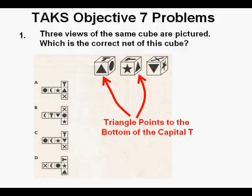These two views show a triangle pointing to the bottom of the big letter T. And which one of the unfolded nets in the answer choices also has the triangle tip pointing to the bottom of the T? We see it here in answer A.